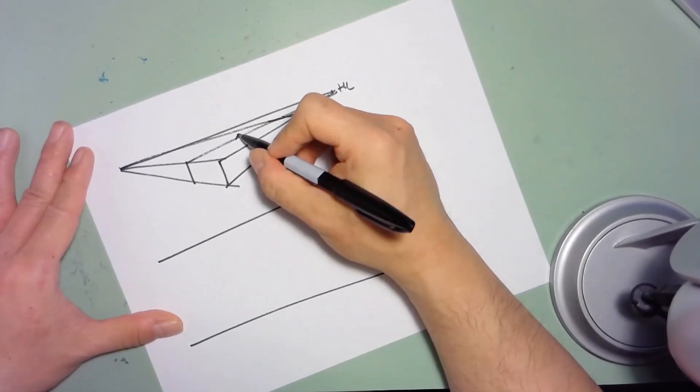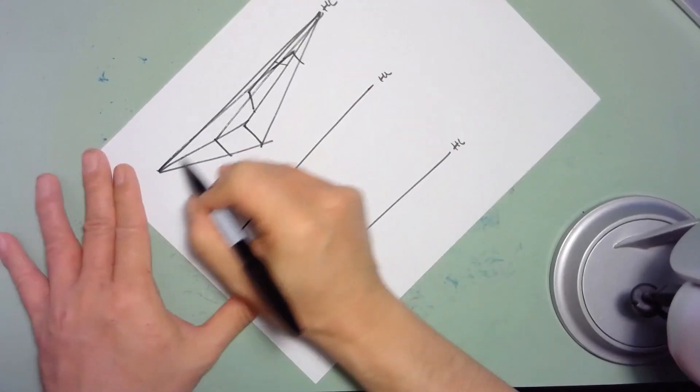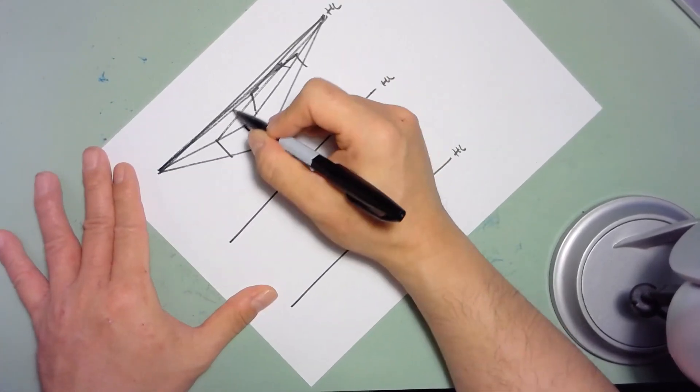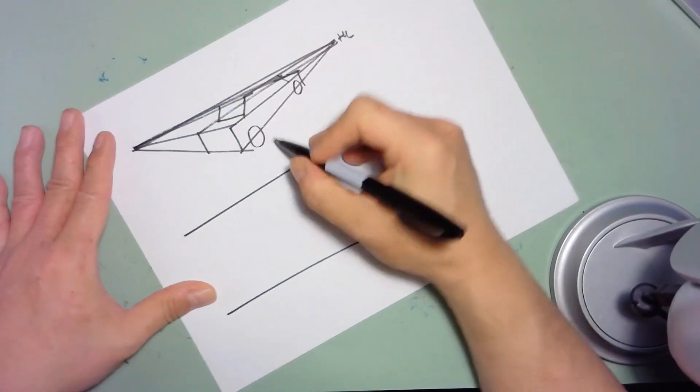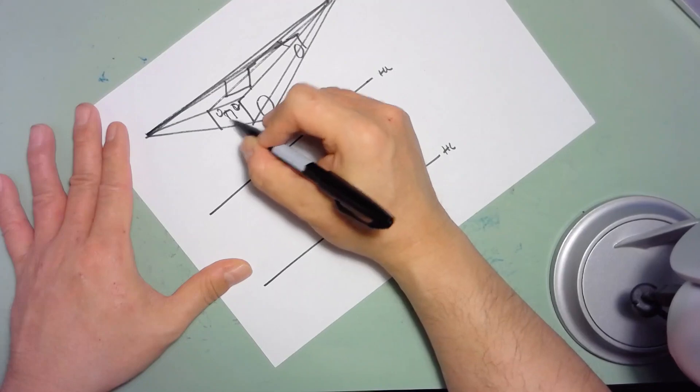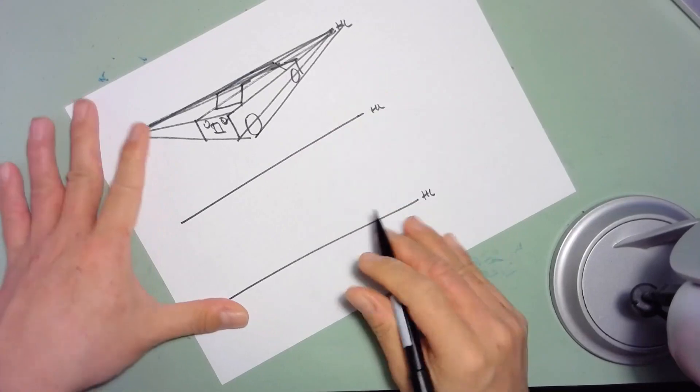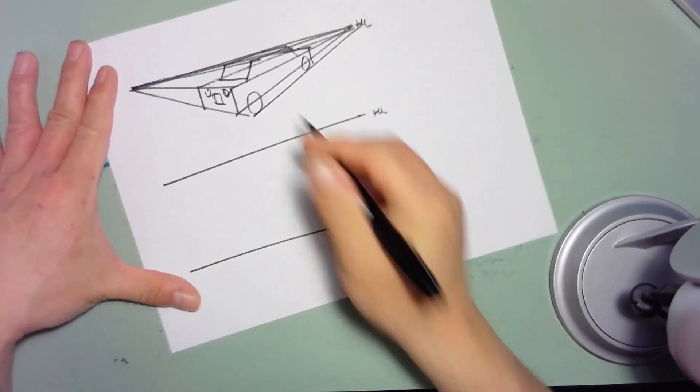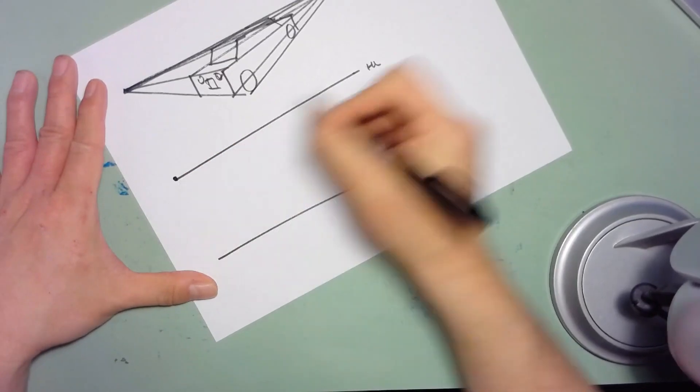Okay, and we can draw the hood or the compartment of this car. So we basically have a view of the car where we can sort of look down on it. Obviously, this car is pretty close to the horizon line.